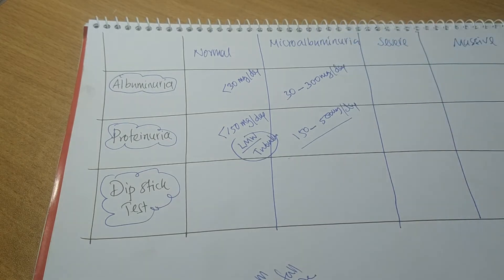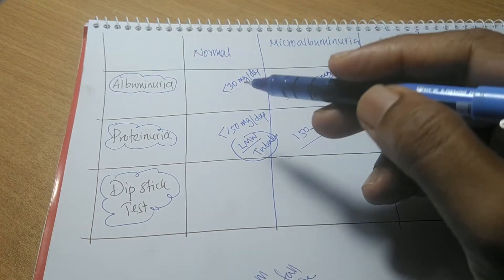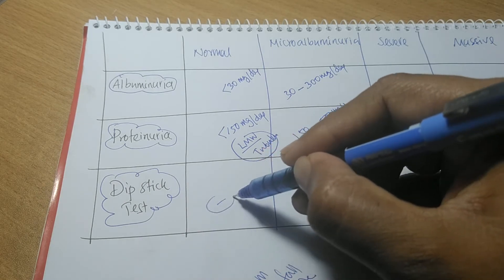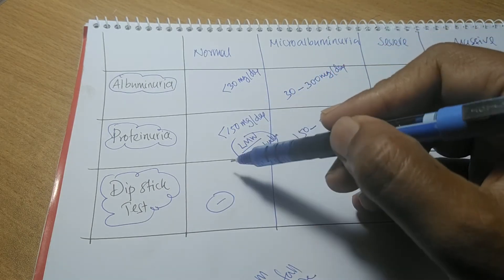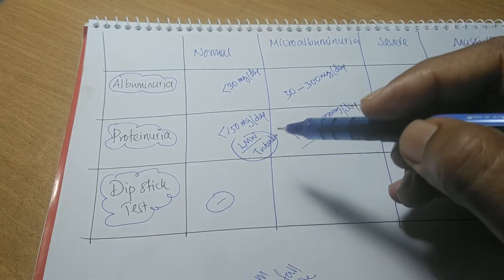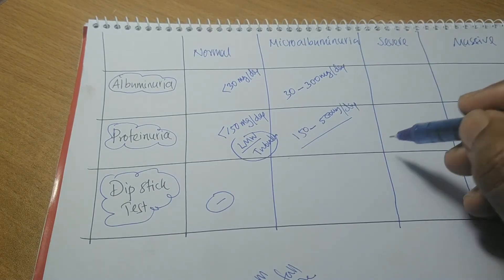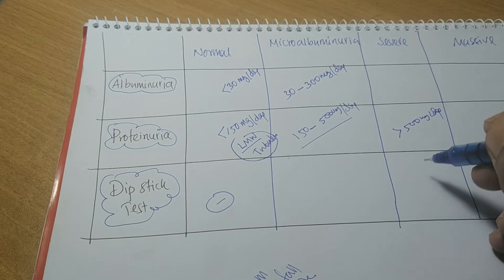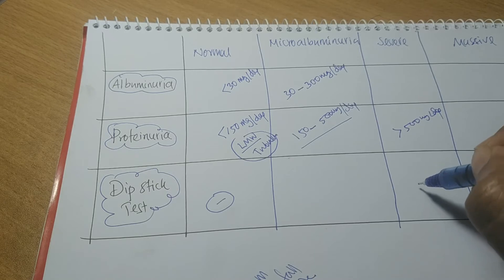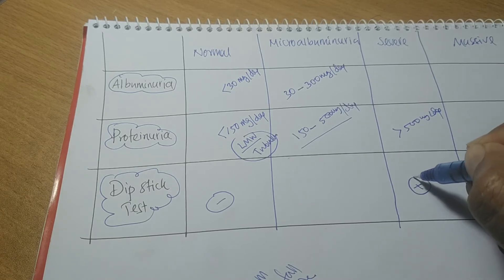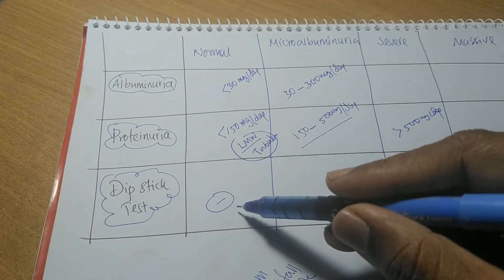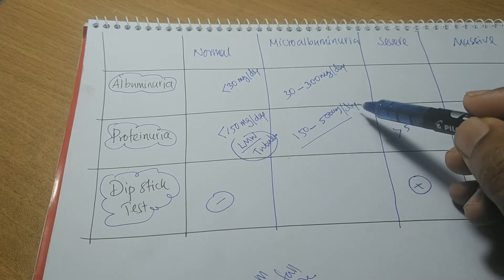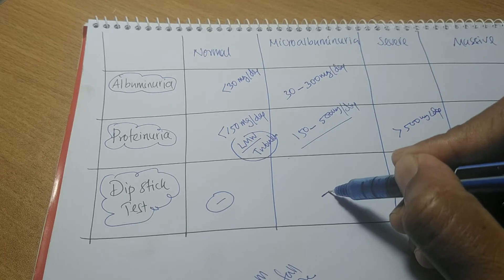Now, why is it called microalbuminuria? There is a test called the dipstick test — a strip that can detect the presence of protein in urine. Normally the dipstick test is negative, meaning less than 150 mg of total protein cannot be detected by it. The dipstick test can actually detect total protein only when it is more than 500 mg per day. So when urine contains more than 500 mg of protein, only then will the dipstick test be positive; otherwise it is negative. In microalbuminuria, total proteinuria is less than 500 mg per day, so the dipstick test will be negative.